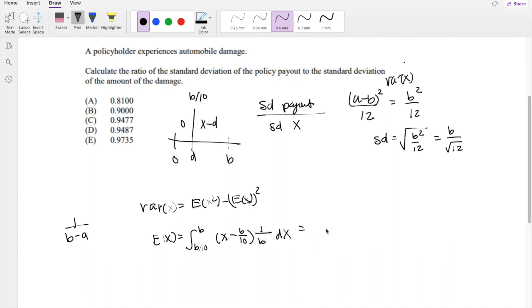So this is equal to, we can just throw the 1 over B outside, and we get x minus B over 10 squared times 2 here, where x is equal to going from B over 10 to B. When we plug in the upper limit, we get 1 over 2B, B minus B over 10 squared, minus B over 10, when I plug in B over 10 here, it will just become 0.